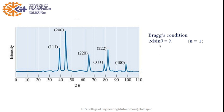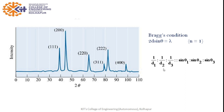The Bragg's condition is 2d sin(theta) = n*lambda. We take n equal to 1 because we record readings only for the first order. From this graph we know the value of theta, and we know the value of lambda (the wavelength of x-rays). So from this equation we can find the value of d for different values of theta, and we can find the ratio 1/d1 : 1/d2 : 1/d3, which corresponds to sin(theta1) : sin(theta2) : sin(theta3).